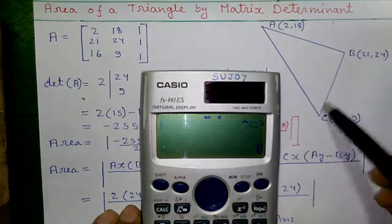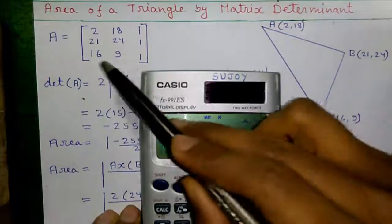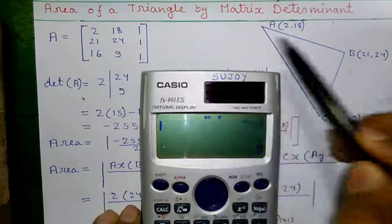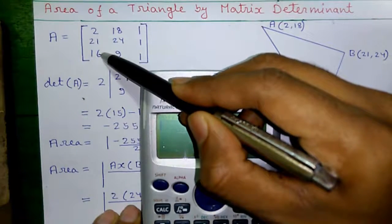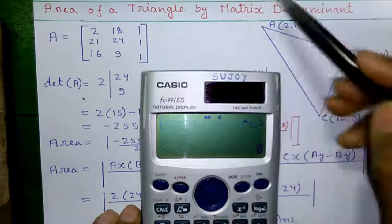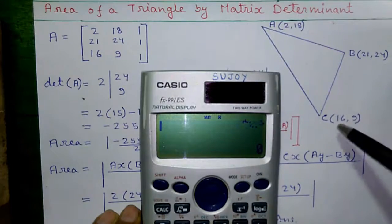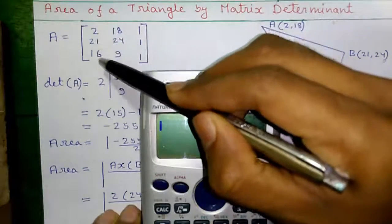Now, let us write this triangle in the form of a matrix. So, this is matrix A representing this triangle. The first column of matrix A is obtained by writing all X coordinate values: 2, 21 and 16.